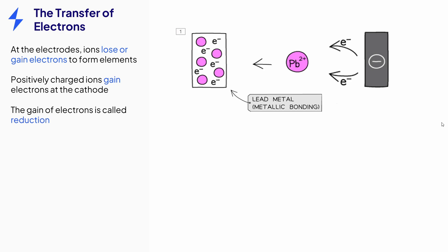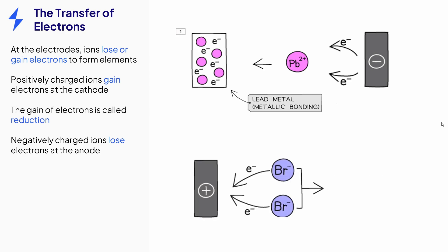The negatively charged bromide ions will lose electrons at the anode, where they form bromine atoms which combine to form bromine molecules. The loss of electrons is called oxidation, and the bromide ions are said to have been oxidised.